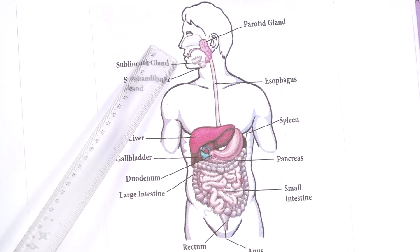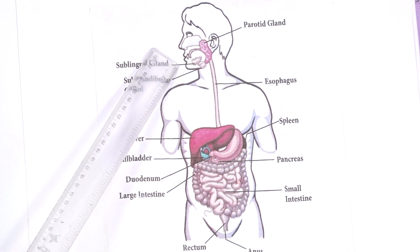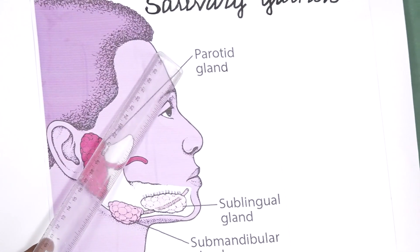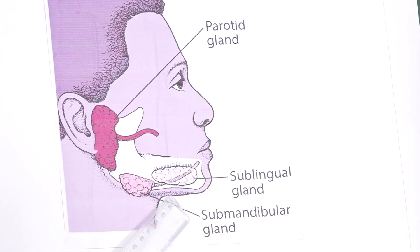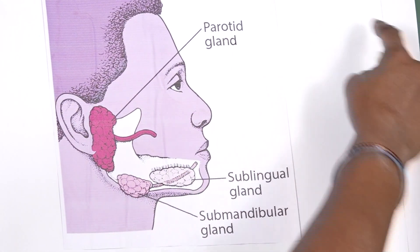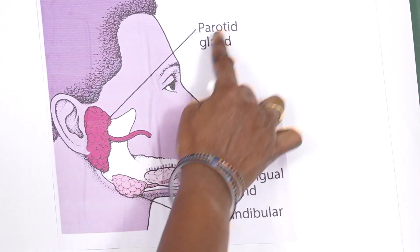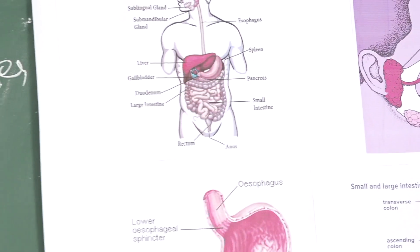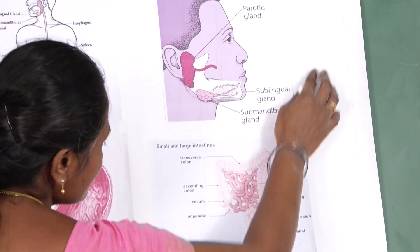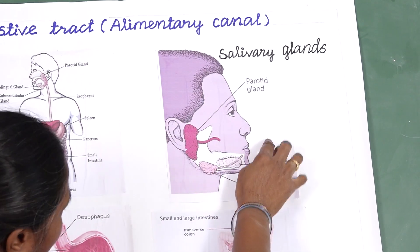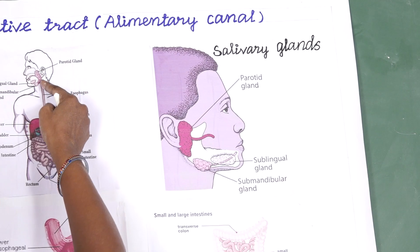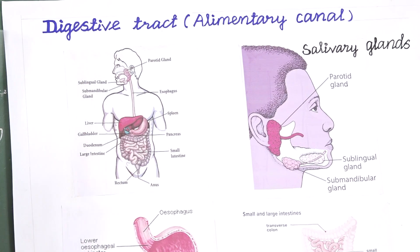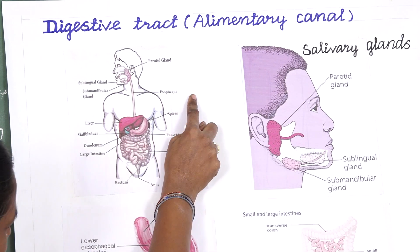Digestion starts with the mouth. The food we eat is chewed well by our teeth. The mouth has three pairs of salivary glands: the parotid gland, the sublingual gland, and the submandibular gland. The parotid is the largest salivary gland. These three pairs of salivary glands secrete 1.5 liters of saliva every day. The chewed food is mixed with saliva, and digestion begins here. It then travels through the esophagus to the stomach. The esophagus, or food pipe, is where digestion does not yet take place.